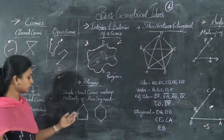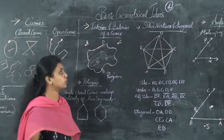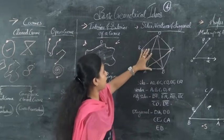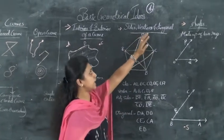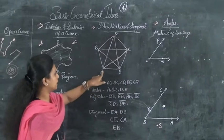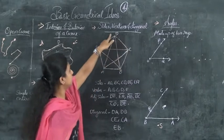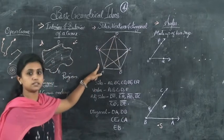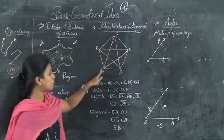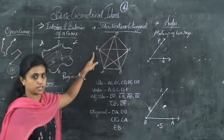In polygons, we learn the sides, vertices, and diagonals. Here, this is a polygon. The sides are line segments AB, BC, CD, DE, and EA. The vertex points are A, B, C, D, E — all are vertices.